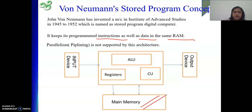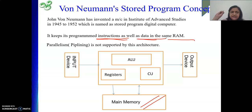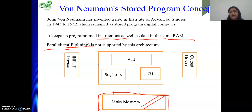The significance of having instruction and data in the same memory is that when one instruction is being fetched, during that time another instruction cannot bring data from memory or store data into memory. We cannot do two memory operations from the same memory at the same time. Due to that, pipelining — which is a form of parallelism where we simultaneously perform two operations — will not be directly supported by the von Neumann architecture.